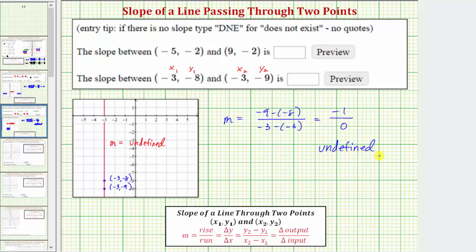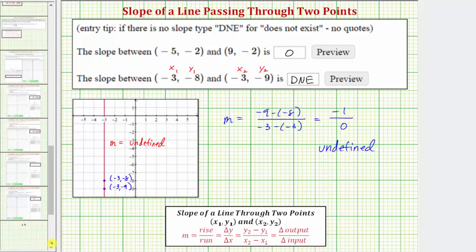Notice that for this question, when the slope is undefined, we're asked to enter DNE. And therefore we enter DNE. We already found the slope of the line passing through the first two points is zero. I hope you found this helpful.